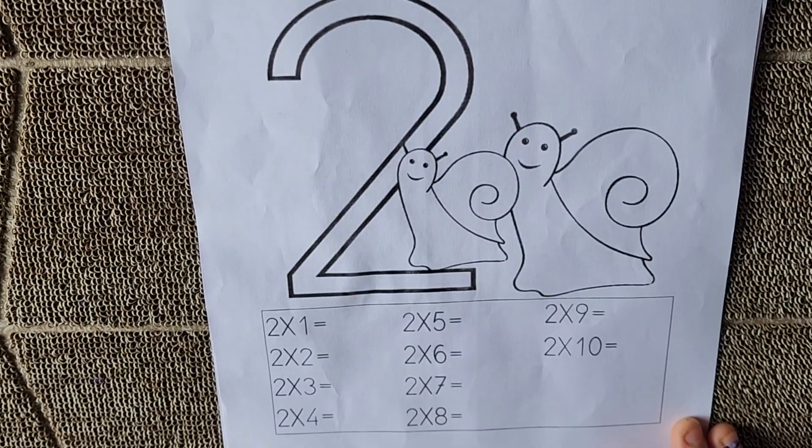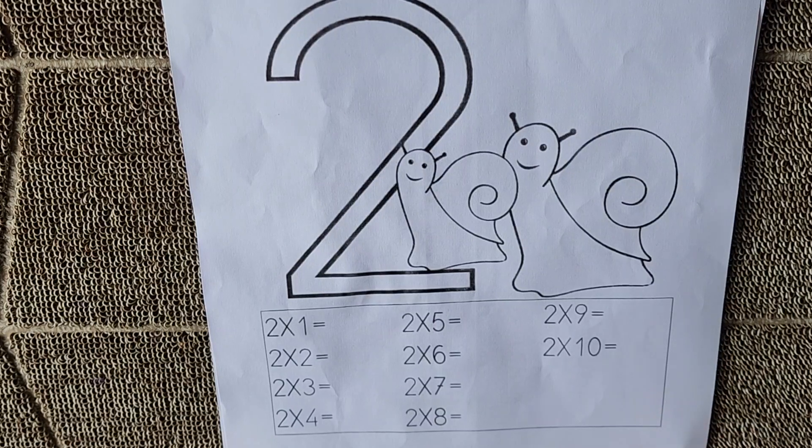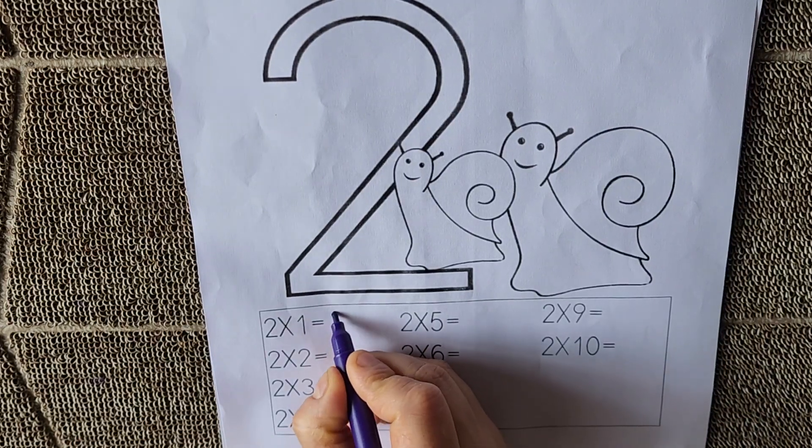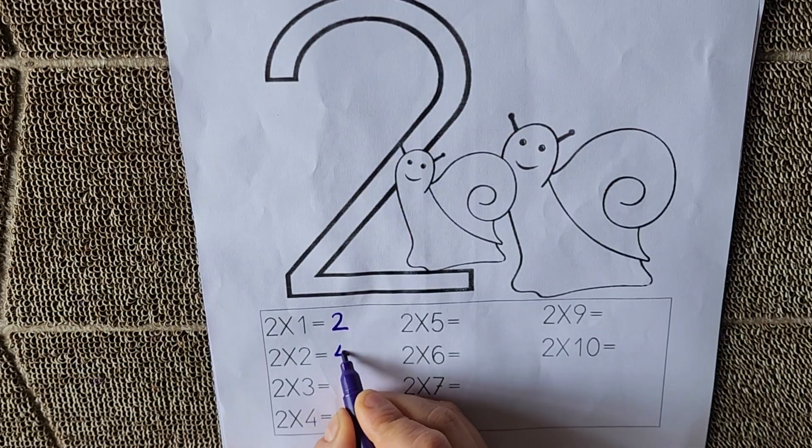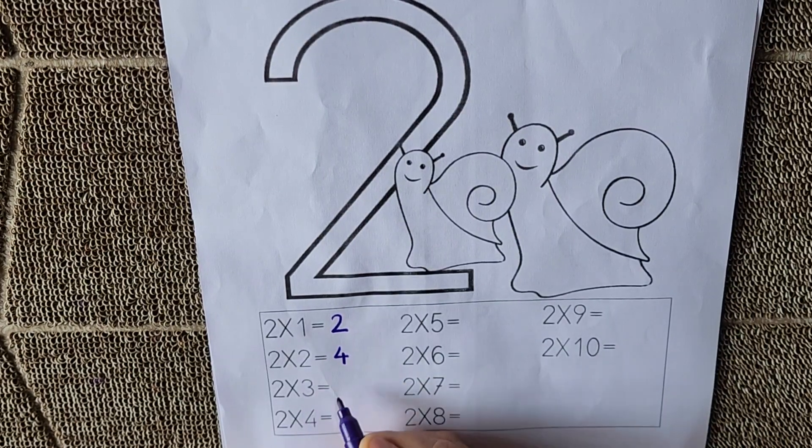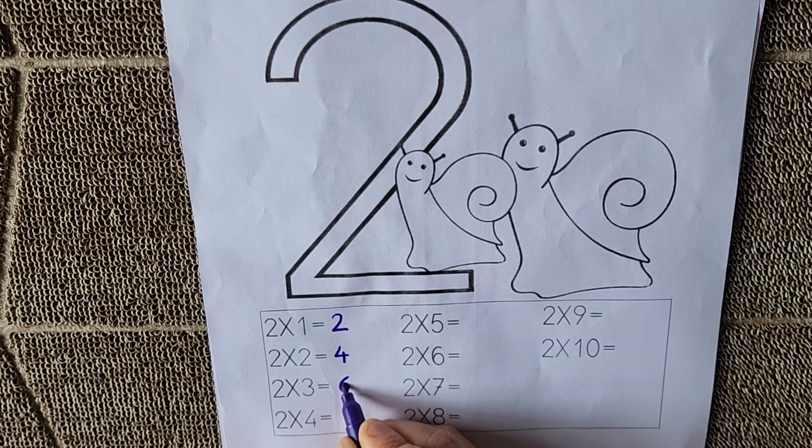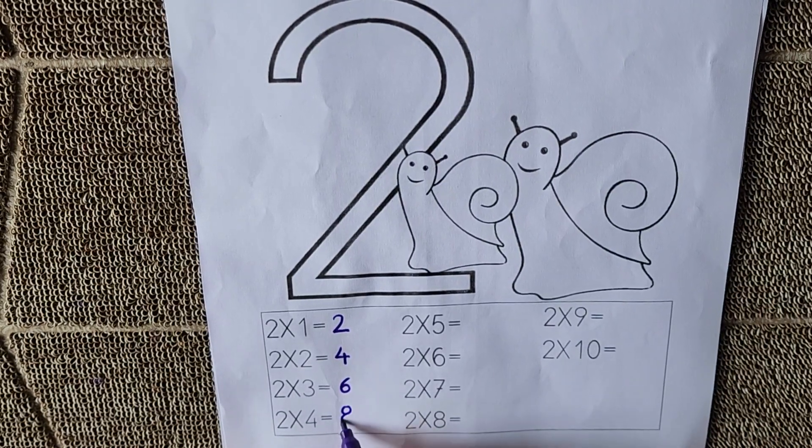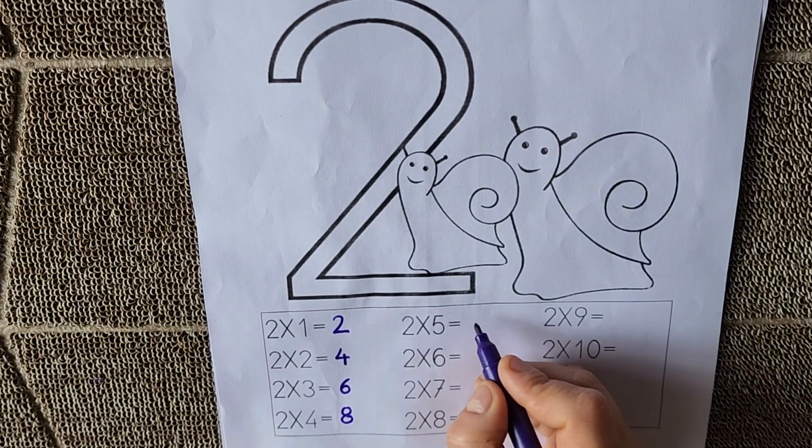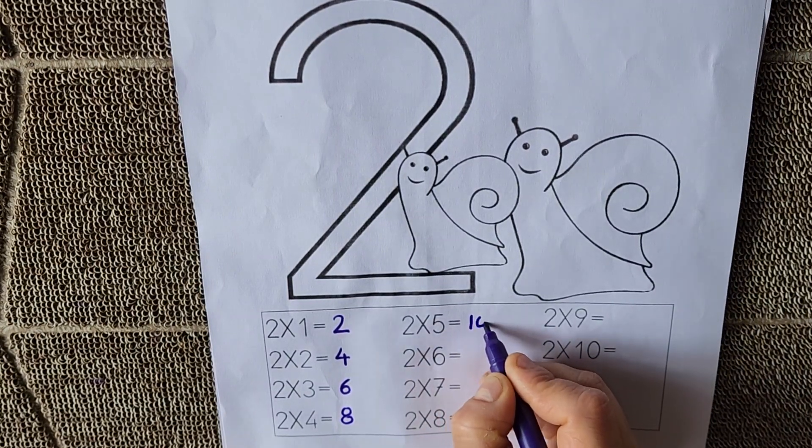Okay kids, here we have one more exercise. Let's do it. 2 1s are 2. 2 2s are 4. 2 3s are 6. 2 4s are 8. 2 5s are 10.